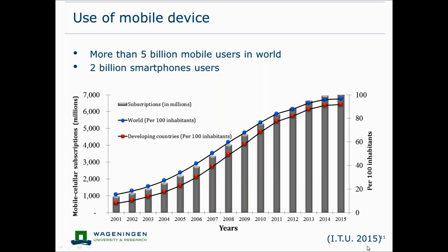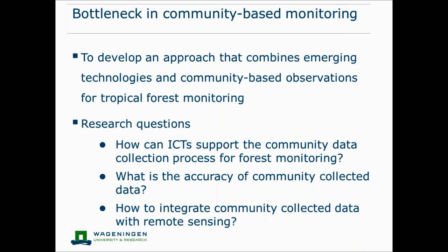Mobile devices are quite cheap and accessible. At the moment we have more than 5 billion users worldwide — as of 2015 figures — with 2 billion smartphone users, and this trend is quite high in developing countries, almost equal to developed countries. Smartphones have all kinds of sensors: camera, voice recorder, compass, GPS — that can really empower local communities to transfer their knowledge into a digital system.